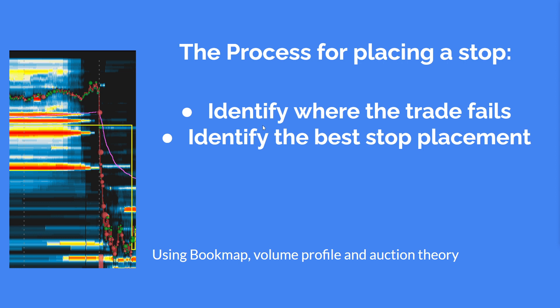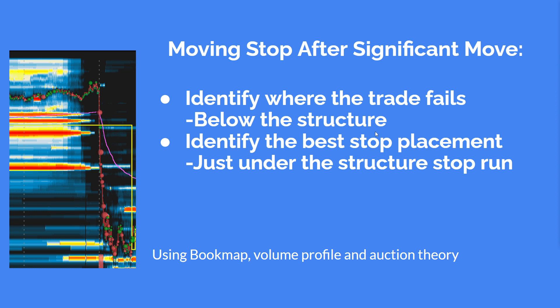The process for placing a stop is to identify where the trade fails. After that, I identify the best stop placement so I don't accidentally get stopped out by a stop run before it turns. That's why it's important to determine where the trade fails. After a move, the trailing stop has to be identified where the trade fails — that's going to be below the structure. Identify the best stop placement, which is under that structure, below a potential stop run.